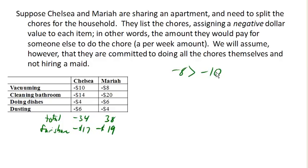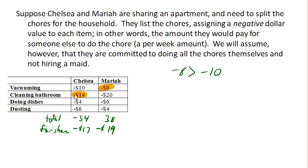Chelsea would be willing to pay 10 dollars for somebody else to do the vacuuming. Mariah would only be willing to pay 8 dollars, and so Mariah's gonna get to do the vacuuming. Likewise, Chelsea dislikes cleaning the bathroom less, and similarly for doing dishes and dusting.